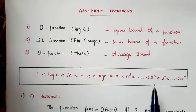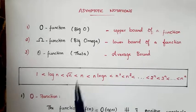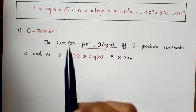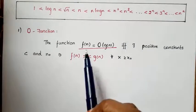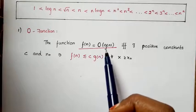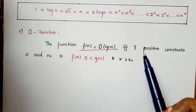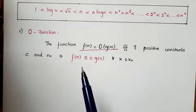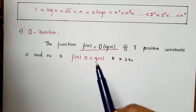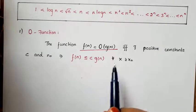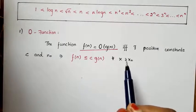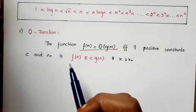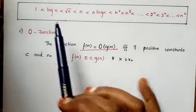First we will learn Big O notation. As per the definition, the function f(n) is equal to Big O of g(n) if and only if there exist positive constants c and n-naught such that f(n) is less than or equal to c times g(n) for all n greater than or equal to n-naught.